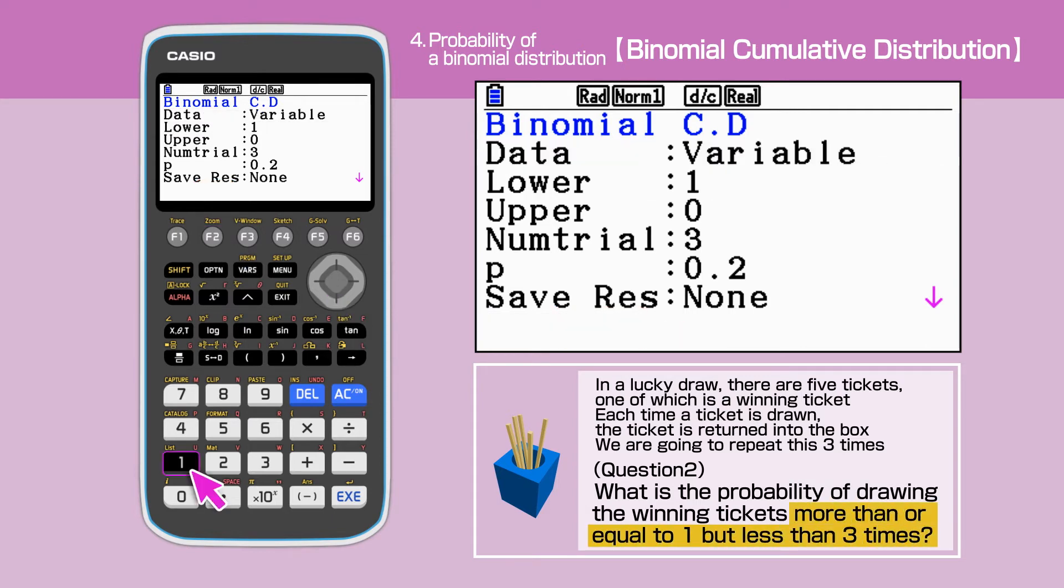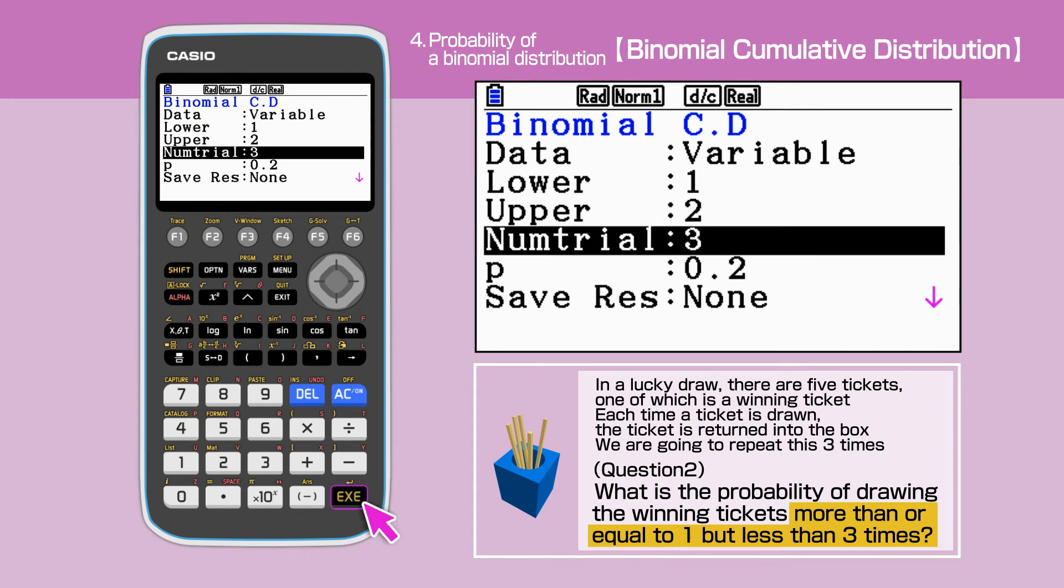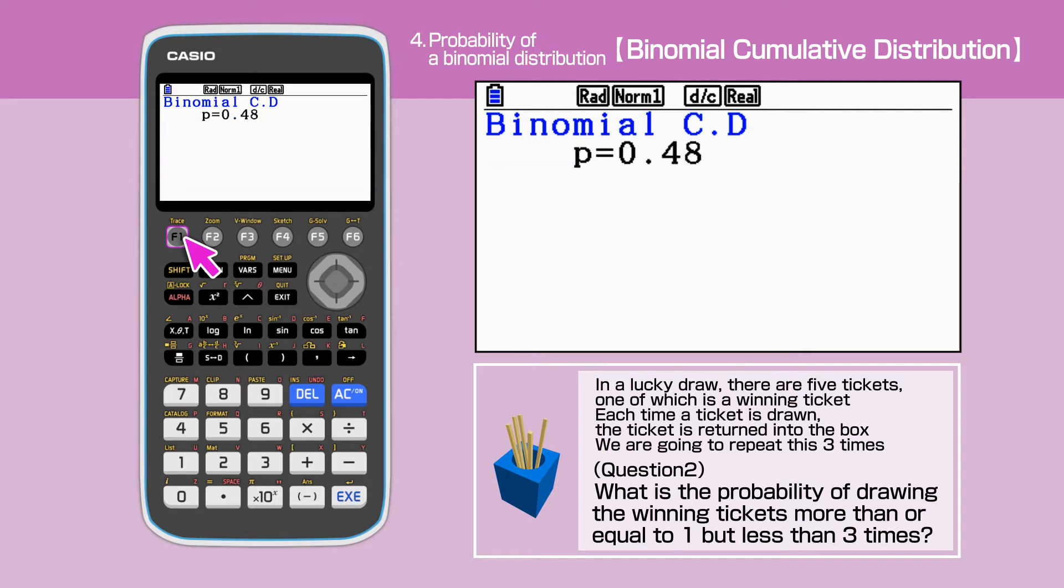Enter 1 for lower, and 2 for upper boundaries. Keep the number of trials and the probability as they are. Move the cursor to highlight execute. Press F1 to calculate. We obtain the answer 0.48.